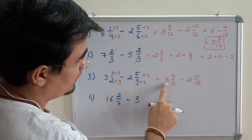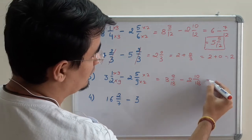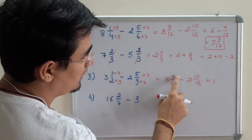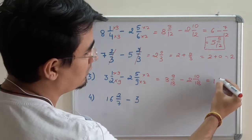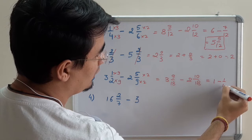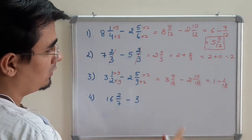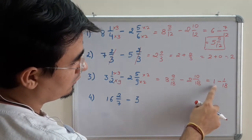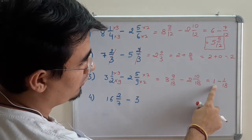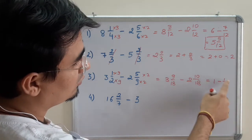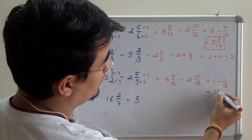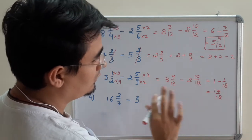Easy. So 3 minus 2 is 1. 9 minus 10 is what? 9 minus 10 is minus 1/18. Now I have to subtract: 1 minus 1/18. That's very easy. 18 upon 18, so 18 minus 1 is 17 upon 18. That's easy.